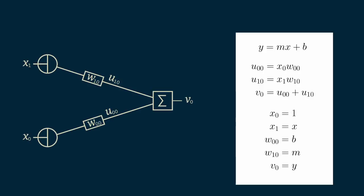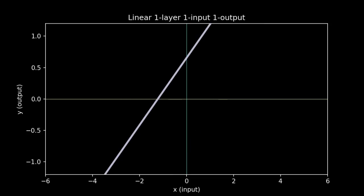We can get a sense of the type of models that this network is capable of learning by choosing random values for the weights, W sub 0,0 and W sub 1,0, and then seeing what relationship pops out between x sub 1 and v sub 0. Remember that we set x sub 0 equal to 1 and are holding it there always. This is a special node called a bias node. It should come as no surprise that the relationships that come out of this linear model are all straight lines.